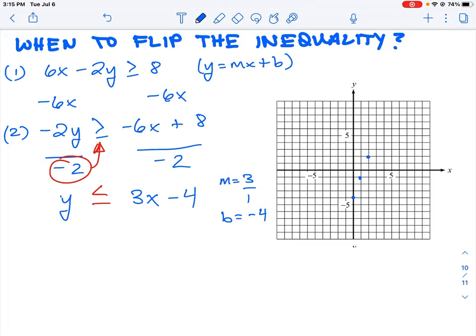Before we join our dots, we need to determine: is this a dashed or solid line? That's the first question you should ask yourself. We know it's going to be solid because the inequality is less than or equal to.